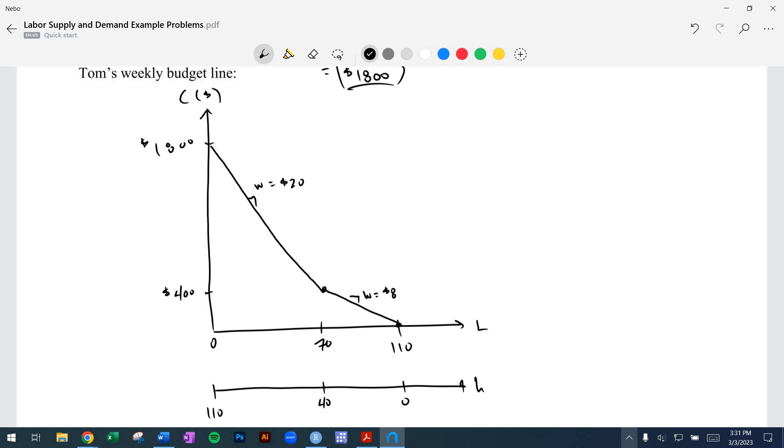We'll stop there and pick it up next time with looking at some utility functions, put in mathematical notation, in order to calculate the optimal bundle of consumption and leisure. Okay. Thanks.